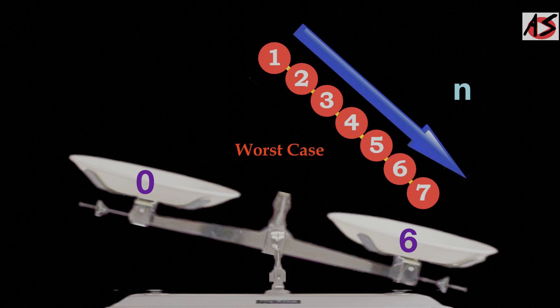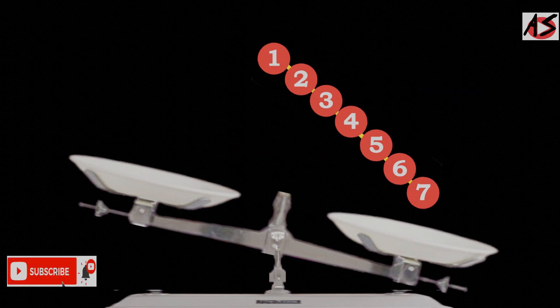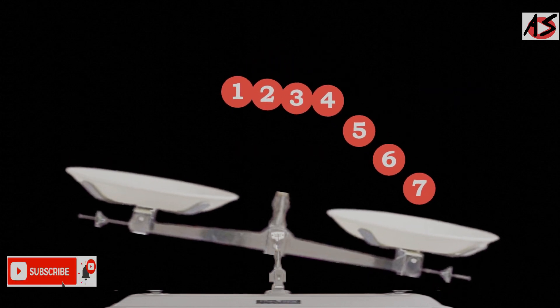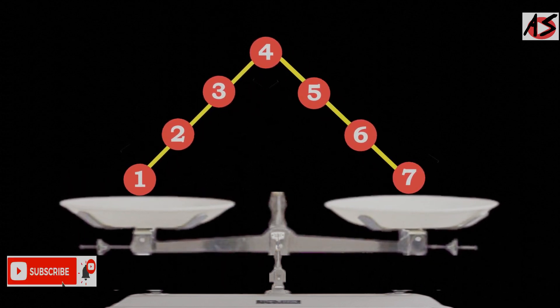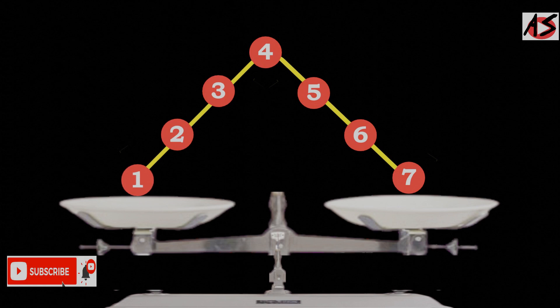That's nothing but linear search with order n. But if you balance the tree and take 4 as root, you will find tree in which root node is balanced.